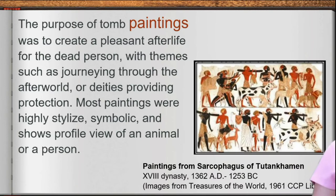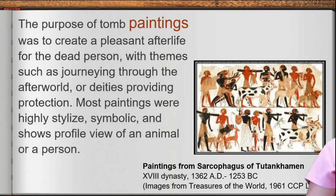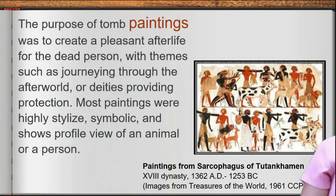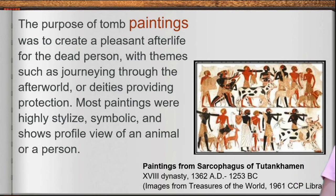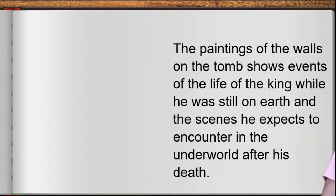Most Egyptian paintings were highly stylized and symbolic, showing profile views of animals or people. The main colors used were red, black, blue, gold, and green — derived from mineral pigments that could withstand strong sunlight without fading. The paintings on throne walls show events from the life of the king while on earth, and the scenes he expected to encounter in the underworld after his death.